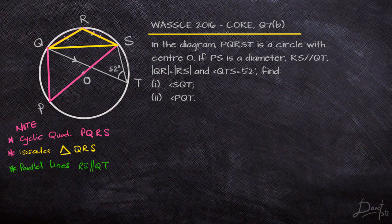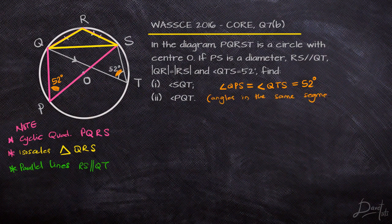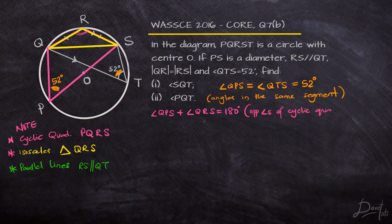I want you to pause and attempt this question yourself before comparing solutions. Angle QPS and angle QTS are equal because they are angles in the same segment, so angle QPS is also 52°. Looking at the cyclic quadrilateral, angle QRS is opposite to angle QPS, so they add up to 180°. Solving, QRS = 180° − 52° = 128°.